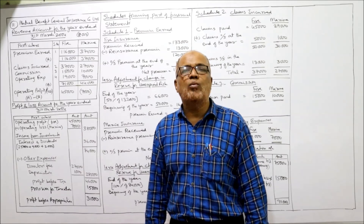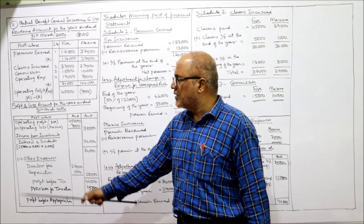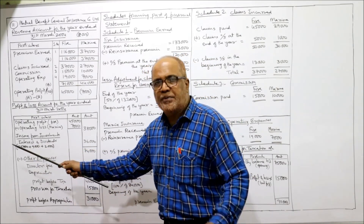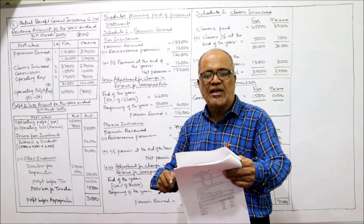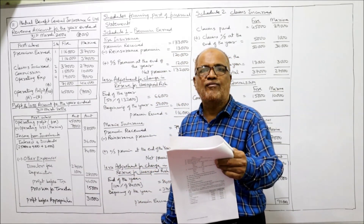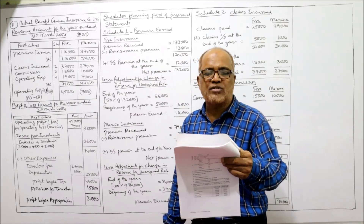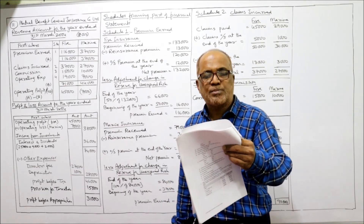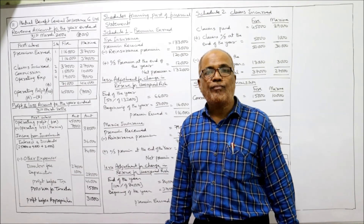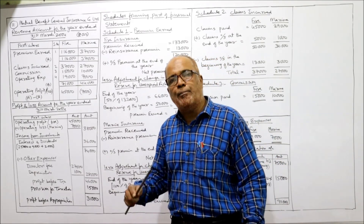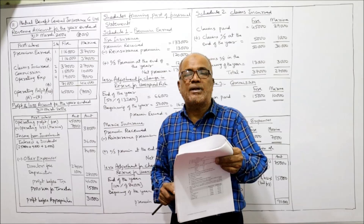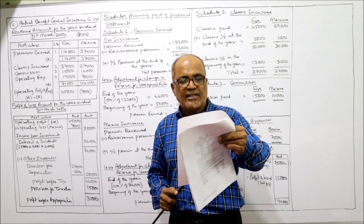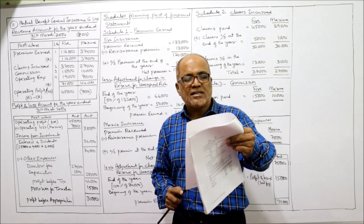Next, dividend received — interest, dividend, and rent are income from investments. So I've taken income from investment: interest and dividends. This 25,000 rupees is the dividend receipt. Next, provision for taxation: at the beginning of the year provision for taxation is 75,000, and income tax paid during the year is 50,000. There is also an adjustment: the directors have decided that the provision for taxation should stand at 40,000 on 31st March 2004.